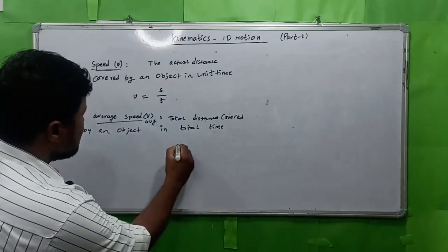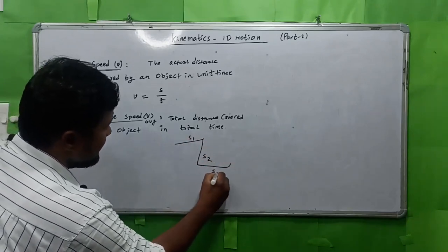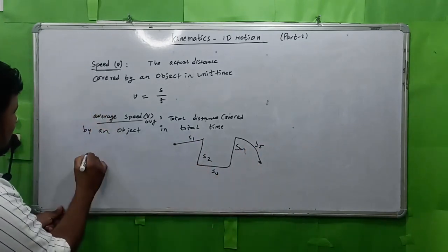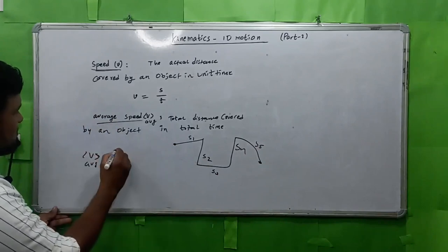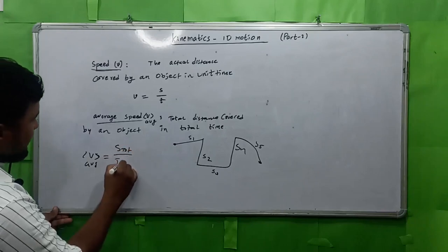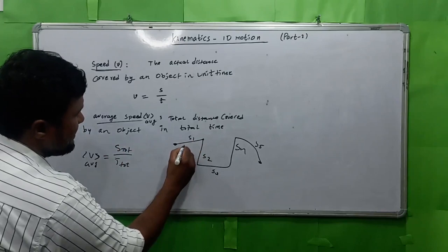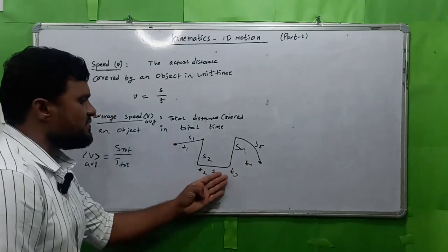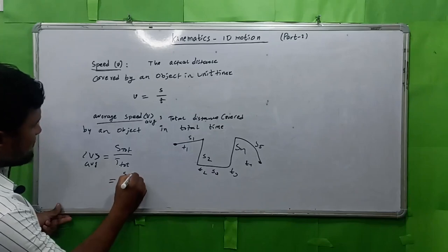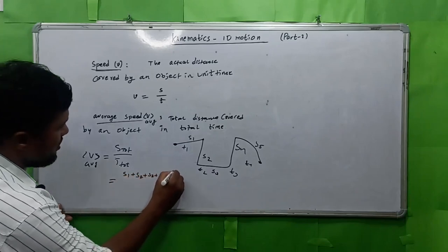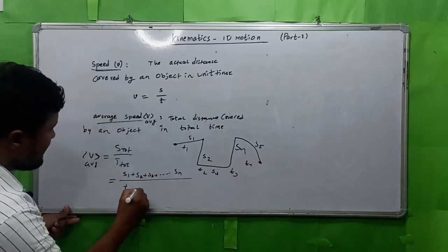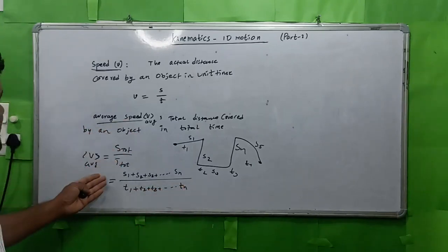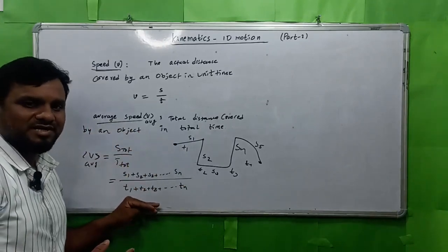Suppose any object covered distances S1, S2, S3, S4, and S5. The average speed formula is V_avg equal to distance total by time total. For S1, time taken is T1; for S2, T2; for S3, T3; for S4, T4. The formula becomes S1 + S2 + S3 + ... + Sn divided by T1 + T2 + T3 + ... + Tn. This is the average speed: total distance covered by an object in total time taken.